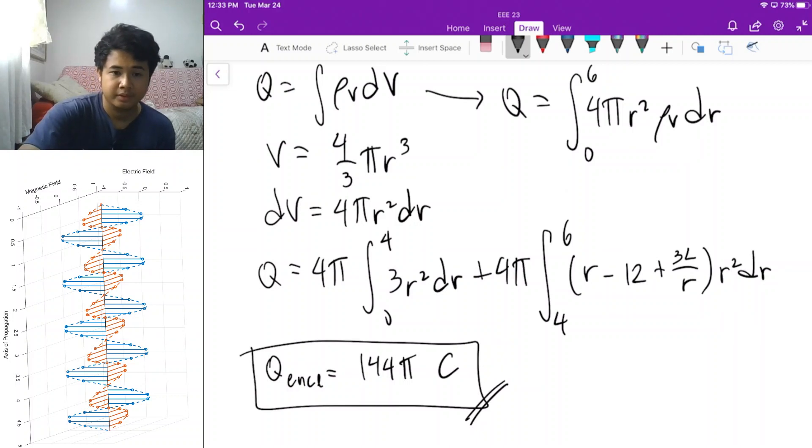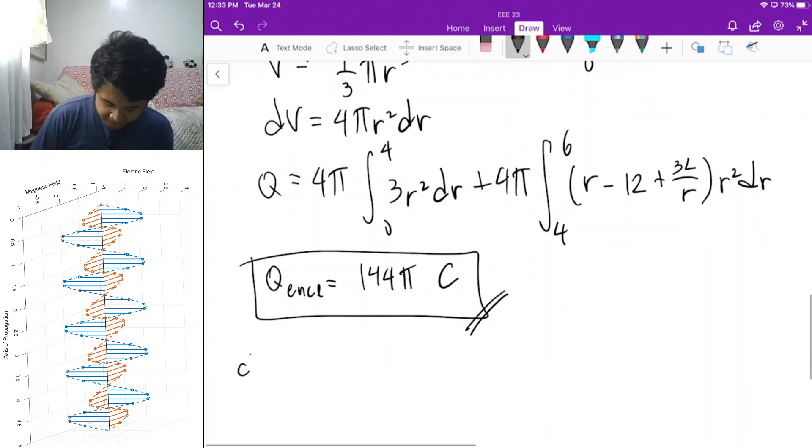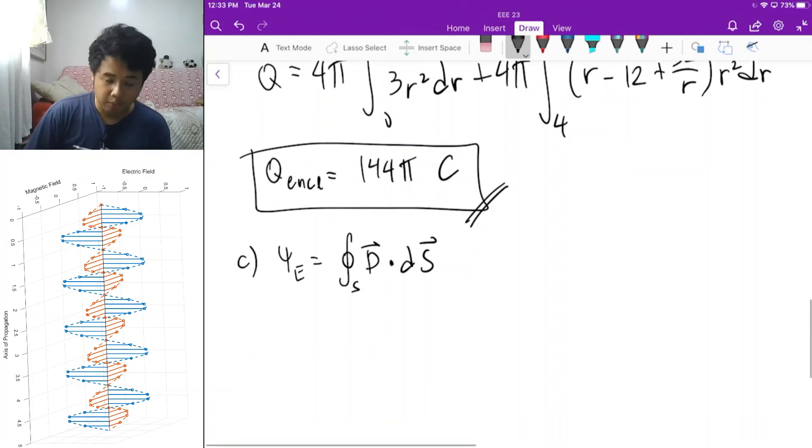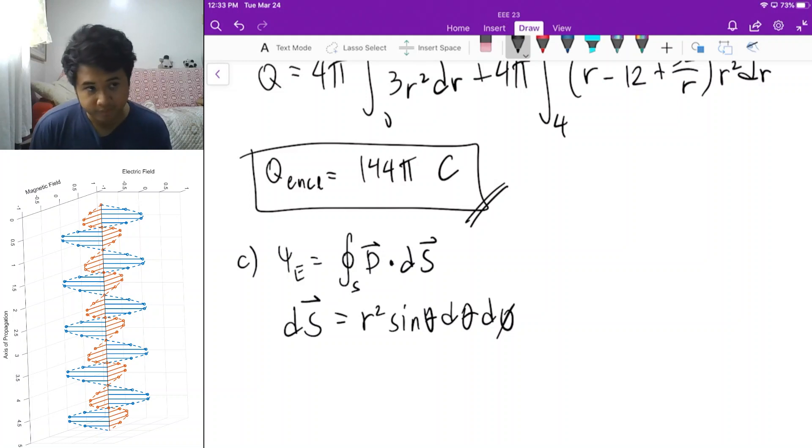For letter C, we want to verify the answer q enclosed by solving for the total flux across that surface. It's the same surface but now we want to solve for the total flux of the closed surface. That's why this integral has a circle. That circle denotes closed surface. Since our surface is just a sphere, that surface is defined by r squared sine theta d theta d phi. This is now your differential surface.